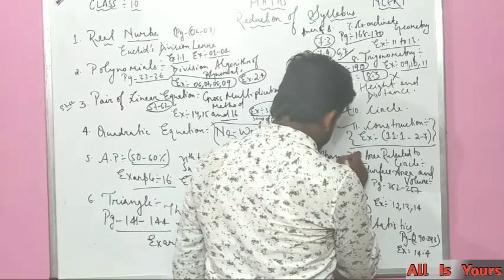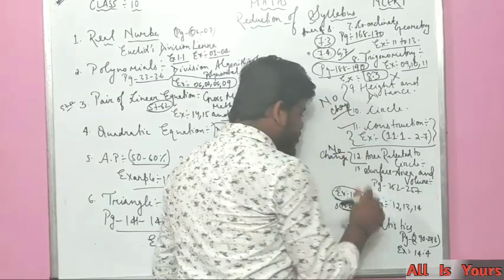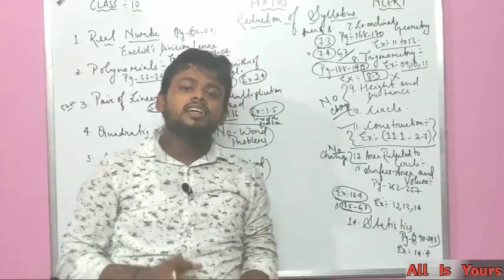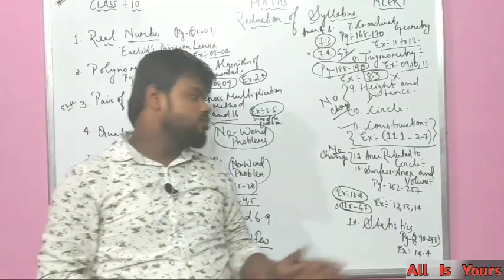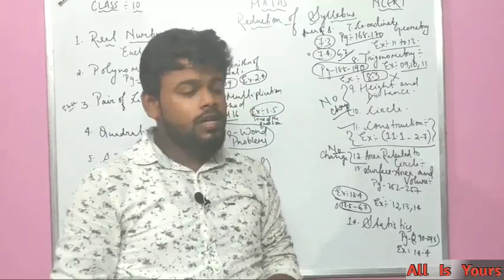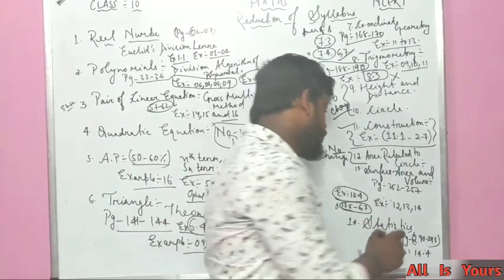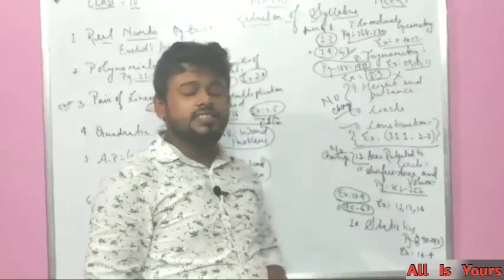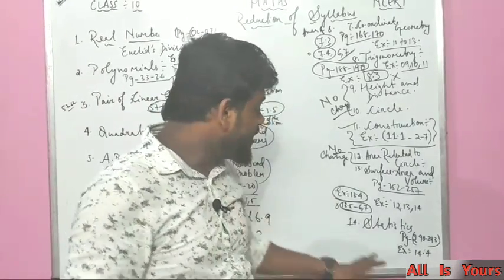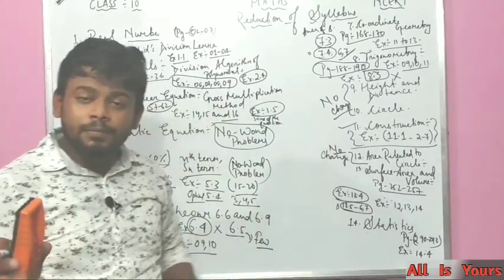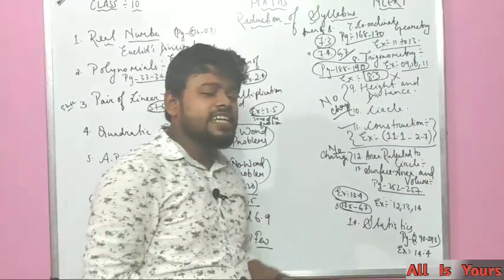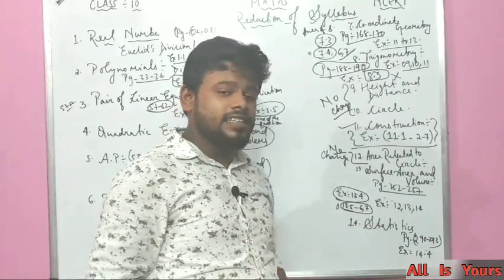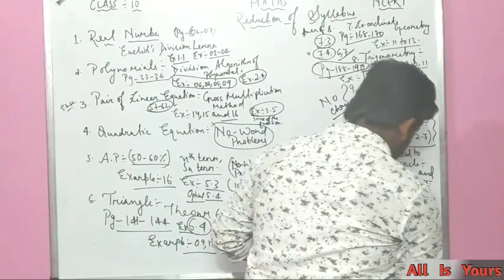Chapter 13, Surface Area and Volume — there is a change. The topic of the Frustum of a Cone has been deleted, covered under page numbers 252 to 257. Exercise 13.4 has been completely deleted. In optional Exercise 13.5, questions 6 and 7 should not be attempted, and Examples 12, 13, and 14 have also been deleted.